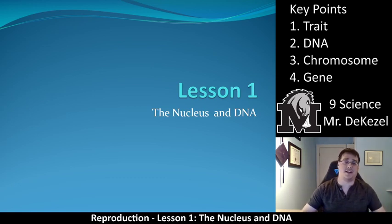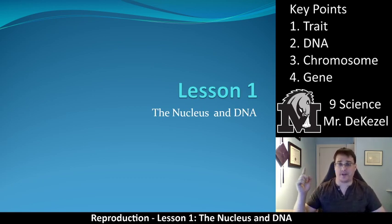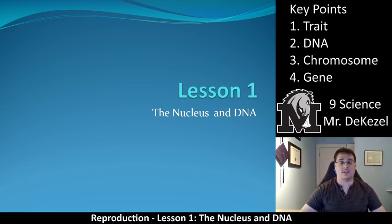You're going to see a title slide like this — Lesson 1, Lesson 5, whatever it is — with the title of the lesson on the slide as well as below with the lesson number. That one below will stay there for the entire time. I'm also going to have key points up at the top for every single lesson. It might be 3, it might be 4, it might be 2 — I'm trying not to go over 4. Today's key points are trait, DNA, chromosome, and gene.